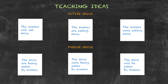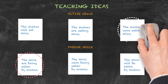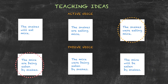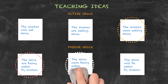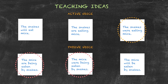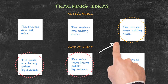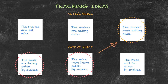The cards will all be face down, and a student might turn over 'The mice are being eaten by snakes' and then 'The snakes were eating mice.' Of course these sentences don't match, and the students would turn the cards back over. The next student might turn over 'The mice were being eaten by snakes' and 'The snakes were eating mice.' The students should know that those two cards match and take them off the board.